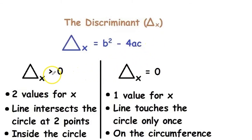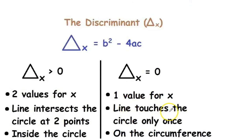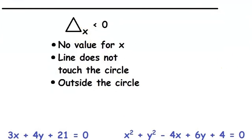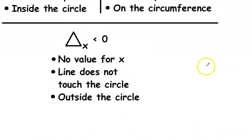When Δ > 0, we have two values for x, which means the line intersects the circle at two points and the line lies inside the circle. When Δ = 0, there is only one value for x and the line touches the circle only once, lying on the circumference. When Δ < 0, there is no value for x and the line does not touch the circle at all — it lies outside the circle.